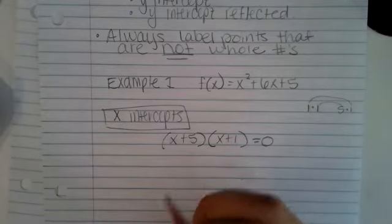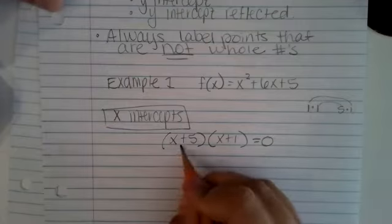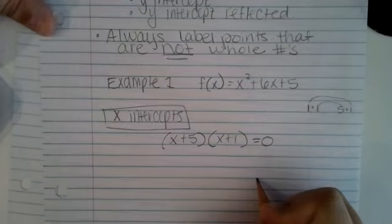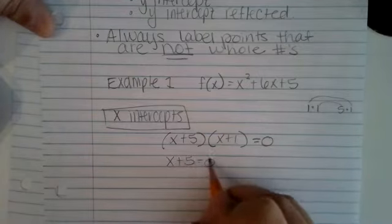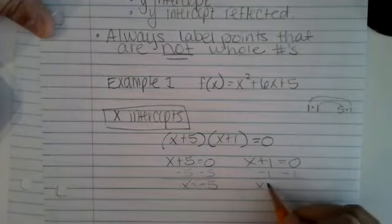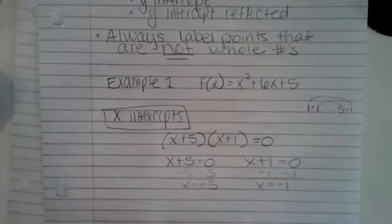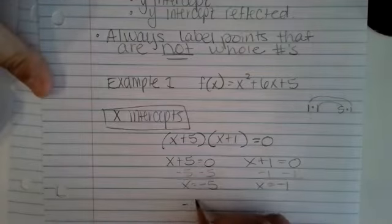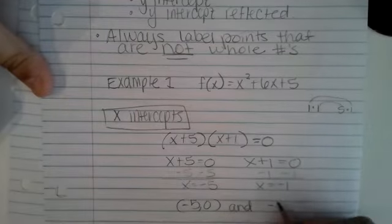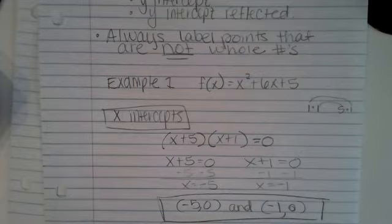One thing I noticed on the last test is that many people had not shown the zero product property to the full extent. I need to set each factor equal to zero. So I need x plus 5 equals zero, and x plus 1 equals zero. Solving: x equals negative 5, and x equals negative 1. Also remember, an intercept is a point on the graph, so it must be written as an ordered pair. My x-intercepts are negative 5 comma 0, and negative 1 comma 0.